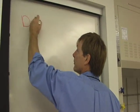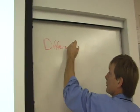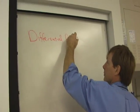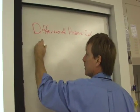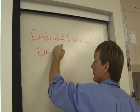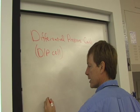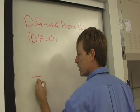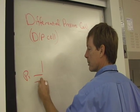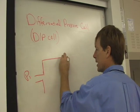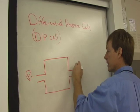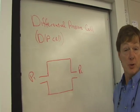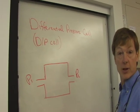Differential pressure cells or DP cell, how does that work? You've got port one, pressure one coming in there, and you've got a box here. And you've got another port. What it does is it measures the difference between two different pressure systems.